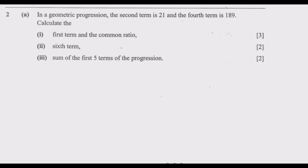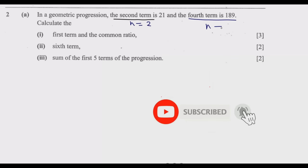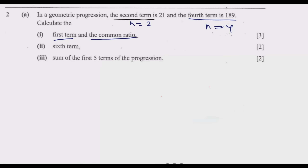For question A, we've been given the second term where n = 2, and the fourth term where n = 4. The question asks us to find the first term A and the common ratio R. A geometric progression is given by T_n = A × R^(n−1), where A is the first term and R is the common ratio. We need to find A and R.